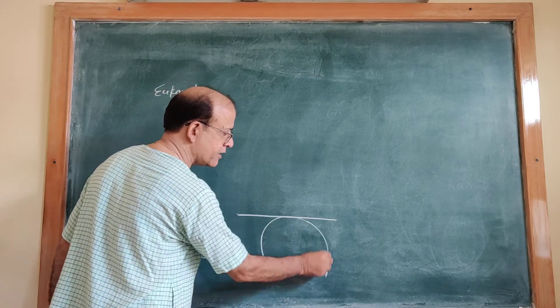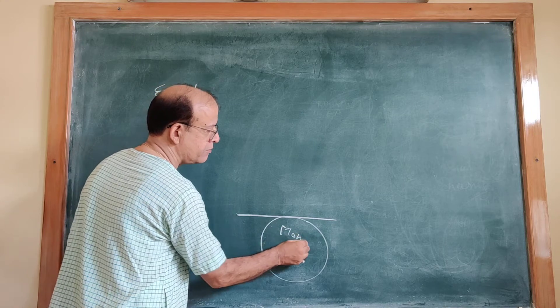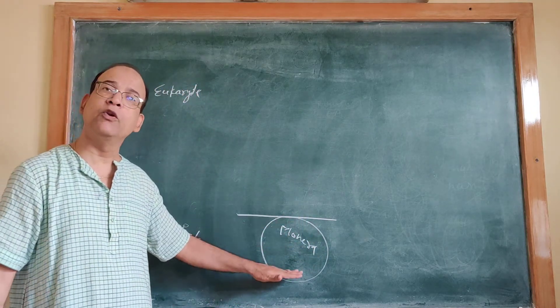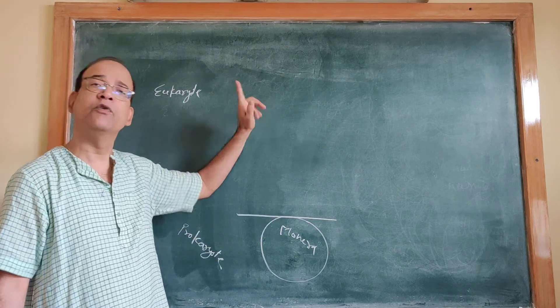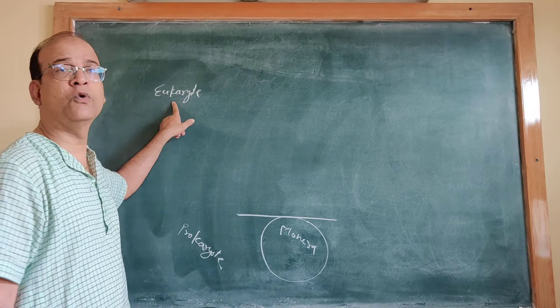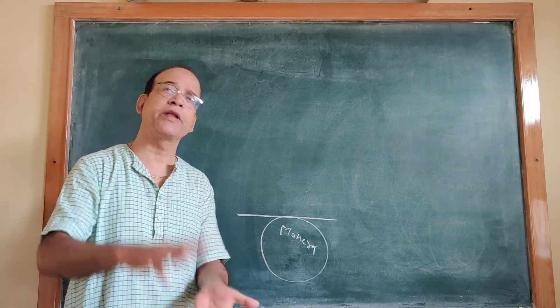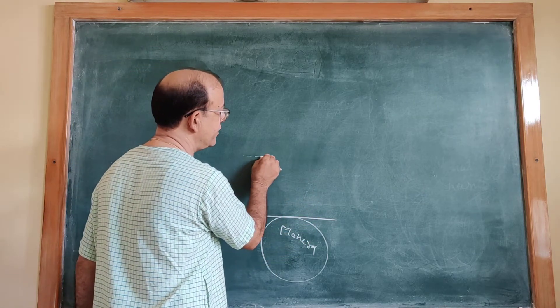You make a line and you name this Kingdom Monera.